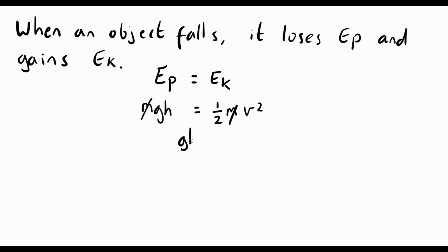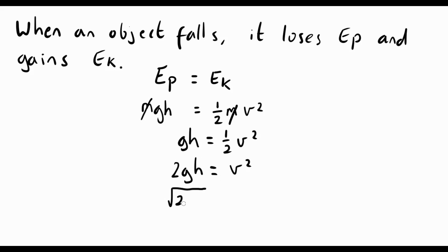After cancelling the M's, we've got: GH equals a half V squared. Rearranging to find V, we bring the 2 over to get 2GH equals V squared. Taking the square root of both sides gives us V equals the square root of 2GH. Interestingly, this expression tells you how fast an object will fall from any particular height — if you know the height from which an object is dropped, this equation gives you the speed at which it hits the ground.